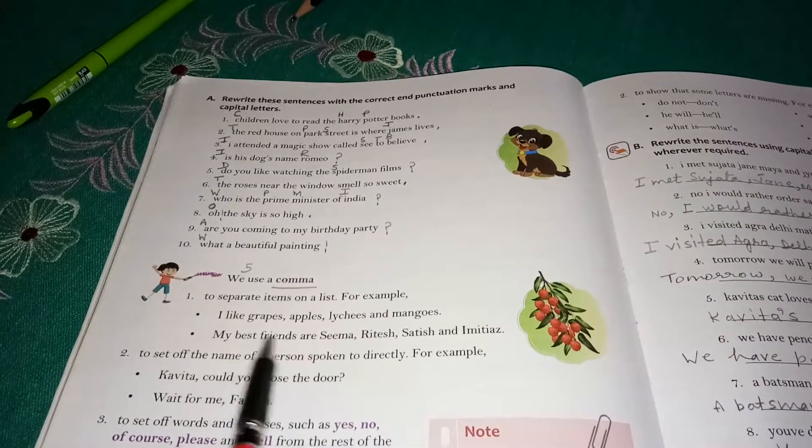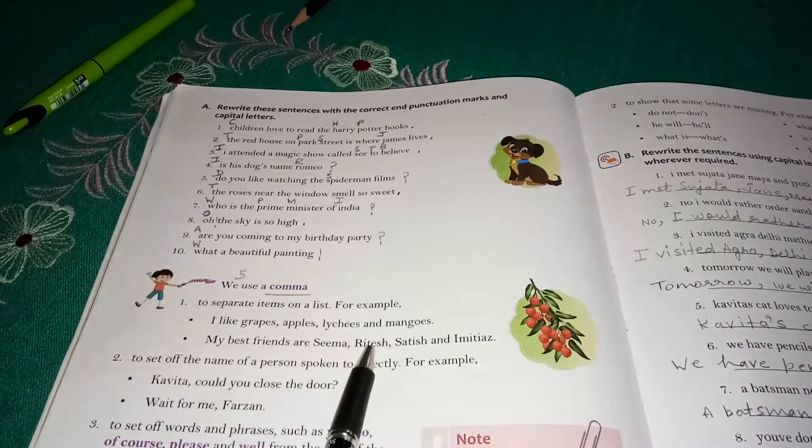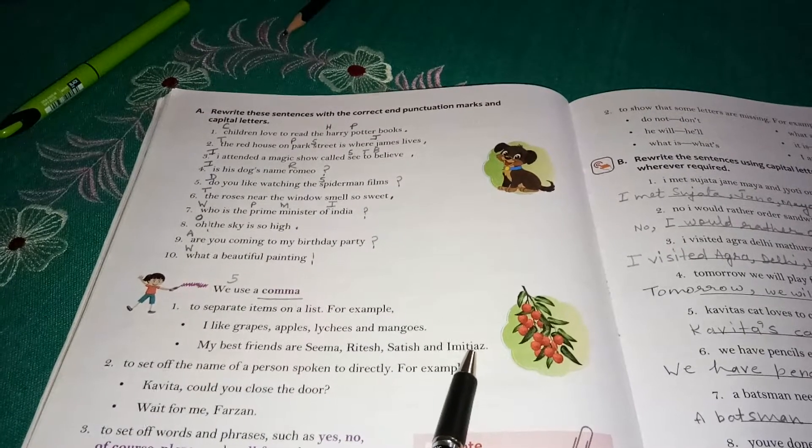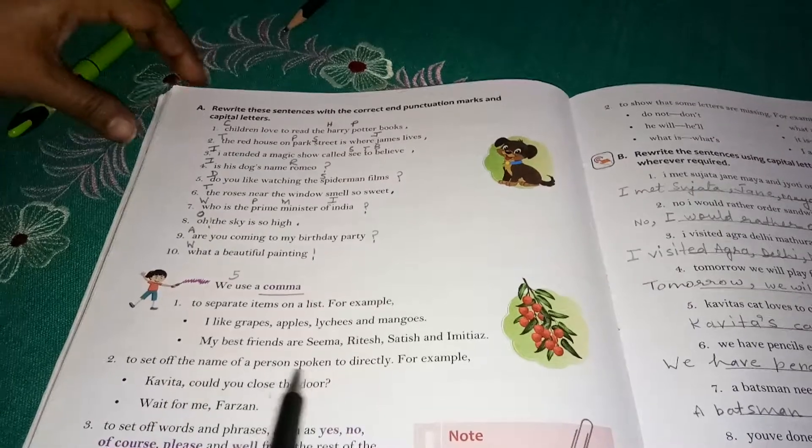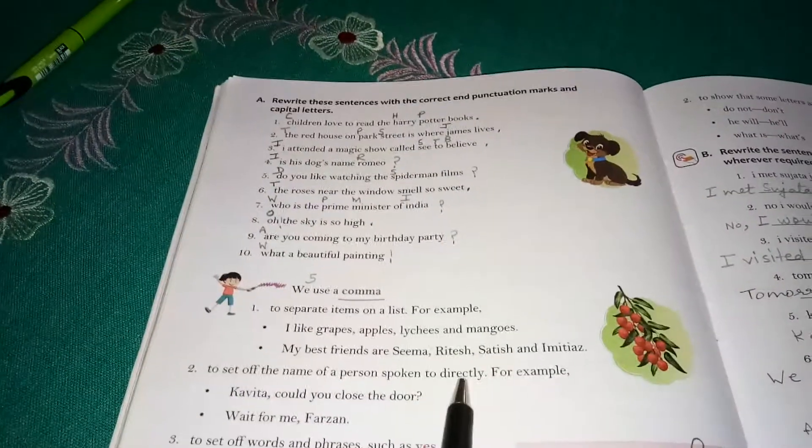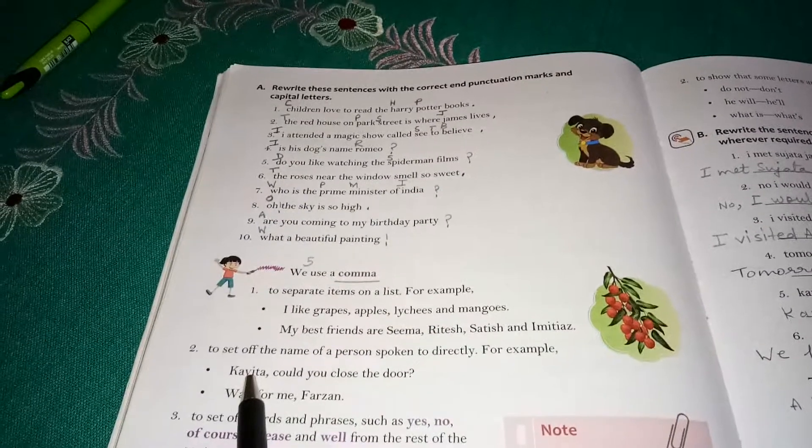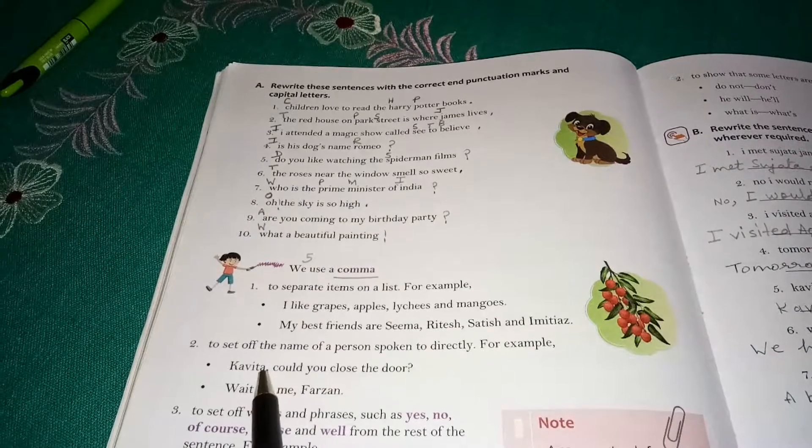My best friends are Seema, Ritesh, Satish, and Imtiyaz. We use comma to set off the name of person spoken to directly. For example, Kavita, could you close the door? I am asking Kavita, so I have put a comma here.